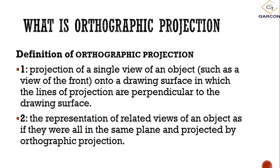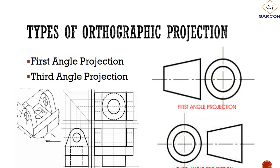Orthographic projection is defined as the projection of a single view of an object — such as a view of the front — onto a drawing surface in which the lines of projection are perpendicular to the drawing surface. In simple terms, orthographic projection is looking at a three-dimensional object in one direction, showing only one side at a time — like holding a cube and turning it to see each side separately.